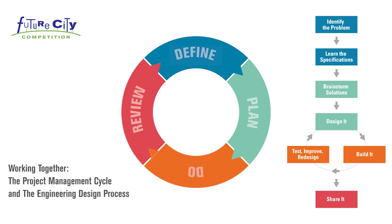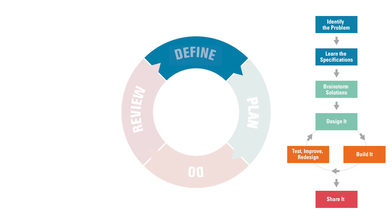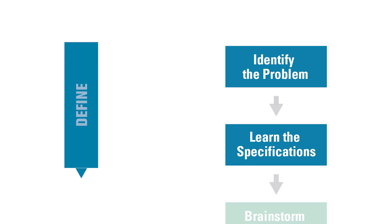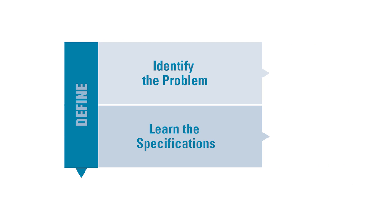Here's what's involved. Your future city team will start in the define stage of the project management cycle. As you move through this stage, you'll also be working through the first two steps of the engineering design process: identify the problem and learn the specifications.